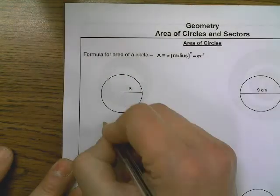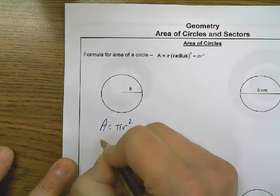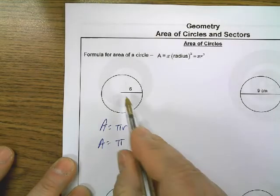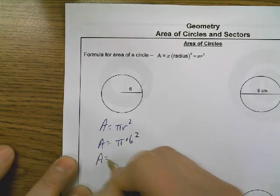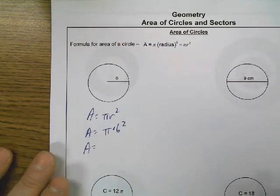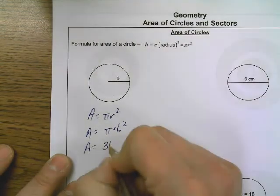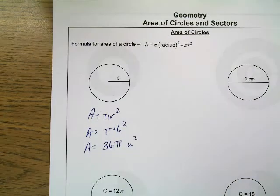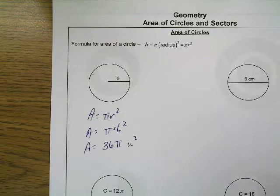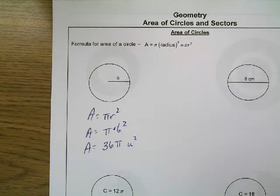If we look at the first circle, we will write our formula and then plug in. The radius is six, because it has a radius drawn and a six next to it, so it will be times six squared. We're going to leave some of these in terms of pi. Six squared is 36, so we get an answer of 36 pi units squared. 36 pi is like a variable in this context — you put the number in front of it, just like 36x. It means 36 times pi, and it is the exact answer. If we put it into a calculator and get a decimal and round it, then it is not an exact answer.